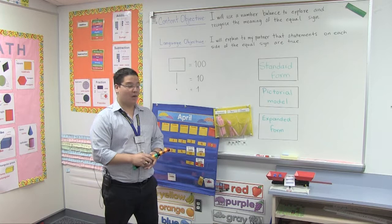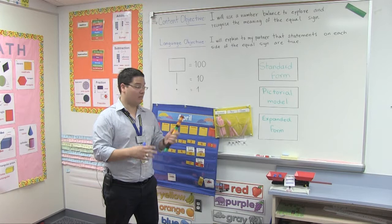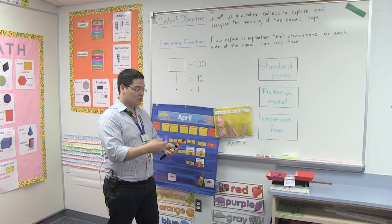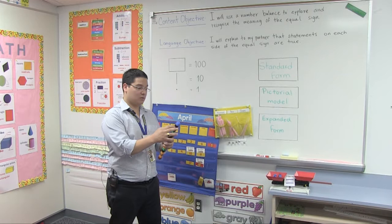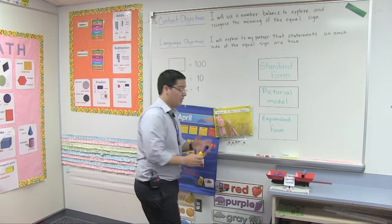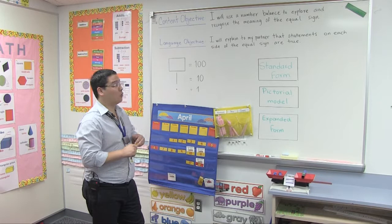But I'm telling them they need to prove and double check if the answer is correct by using a number balance. If the balance is on level, it means that the equation is correct — the statements are true because they mean the same. So they will get some unifix cubes, say their answer is eight, count one through eight, and put those unifix cubes on the other side. If they see it is balanced, it's because their answer is correct.